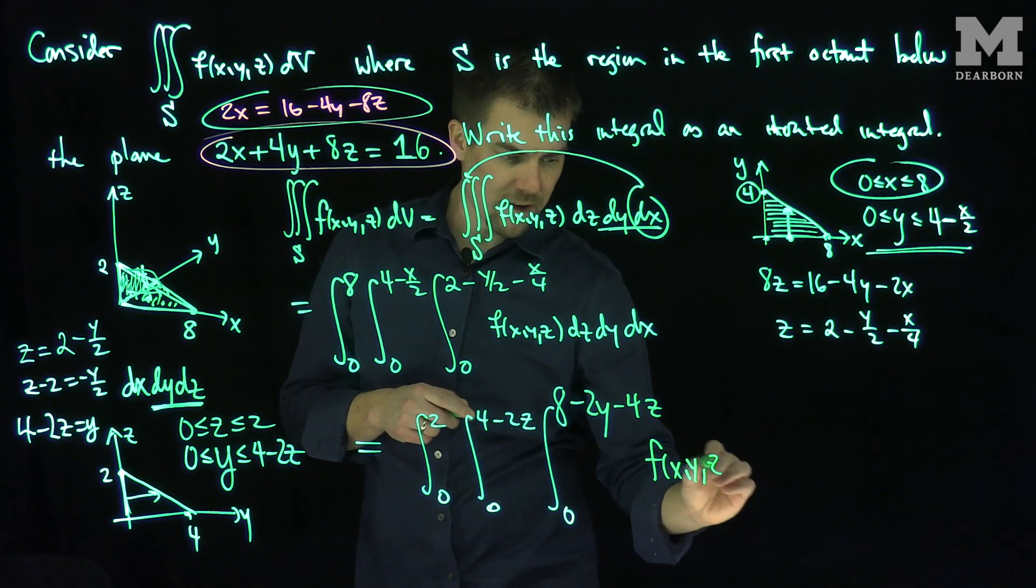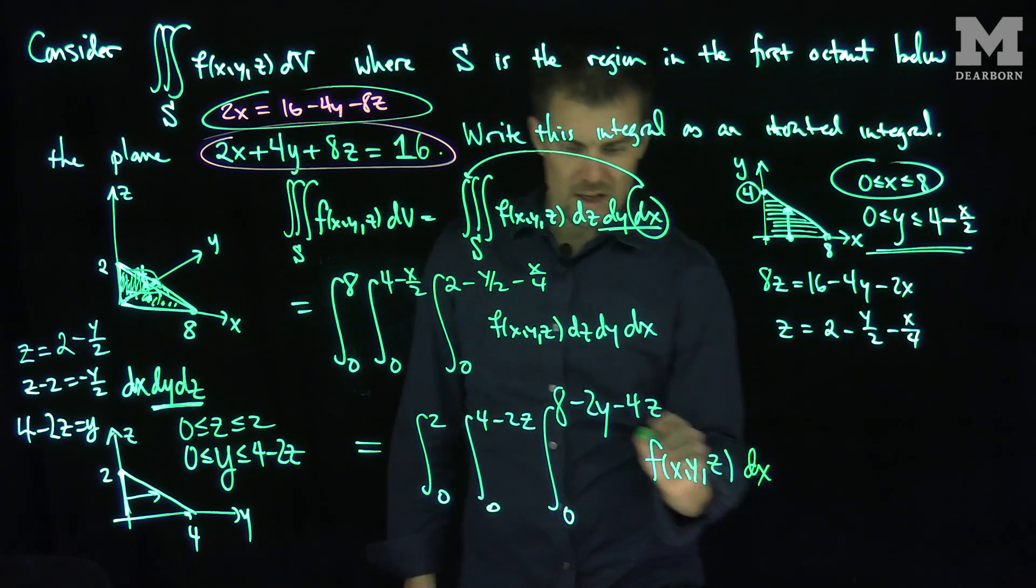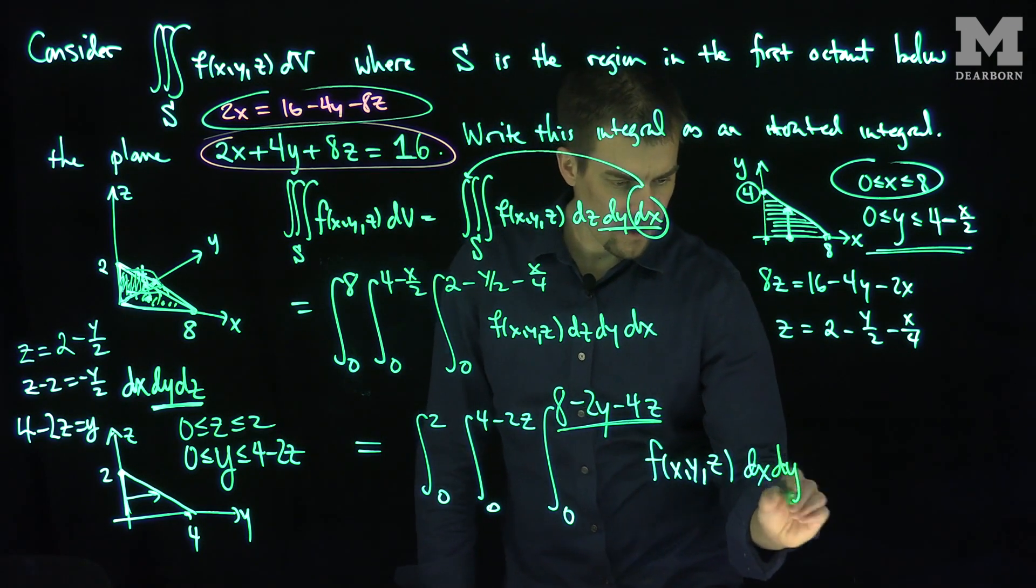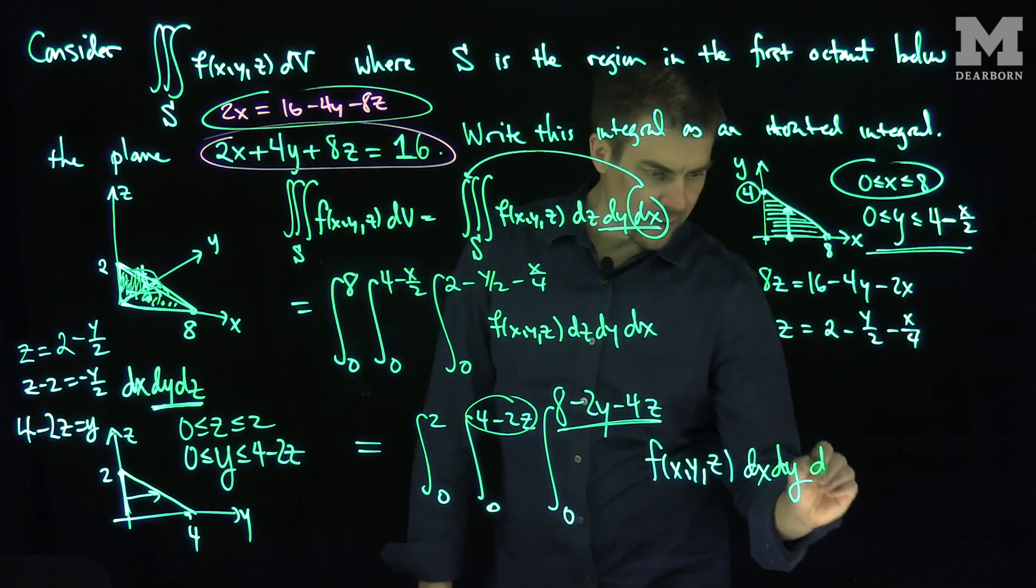f of x, y, z, whatever that function happens to be. Then what did I do first? I did a dx first because my x limits depend on y and z. Then I do a y. My y depends only on z. Then finally I do a z.